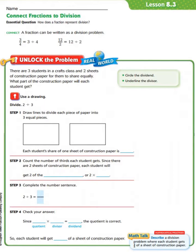Let's take a look at our Unlock the Problem. There are 3 students in a crafts class and 2 sheets of construction paper for them to share equally. What part of the construction paper will each student get?